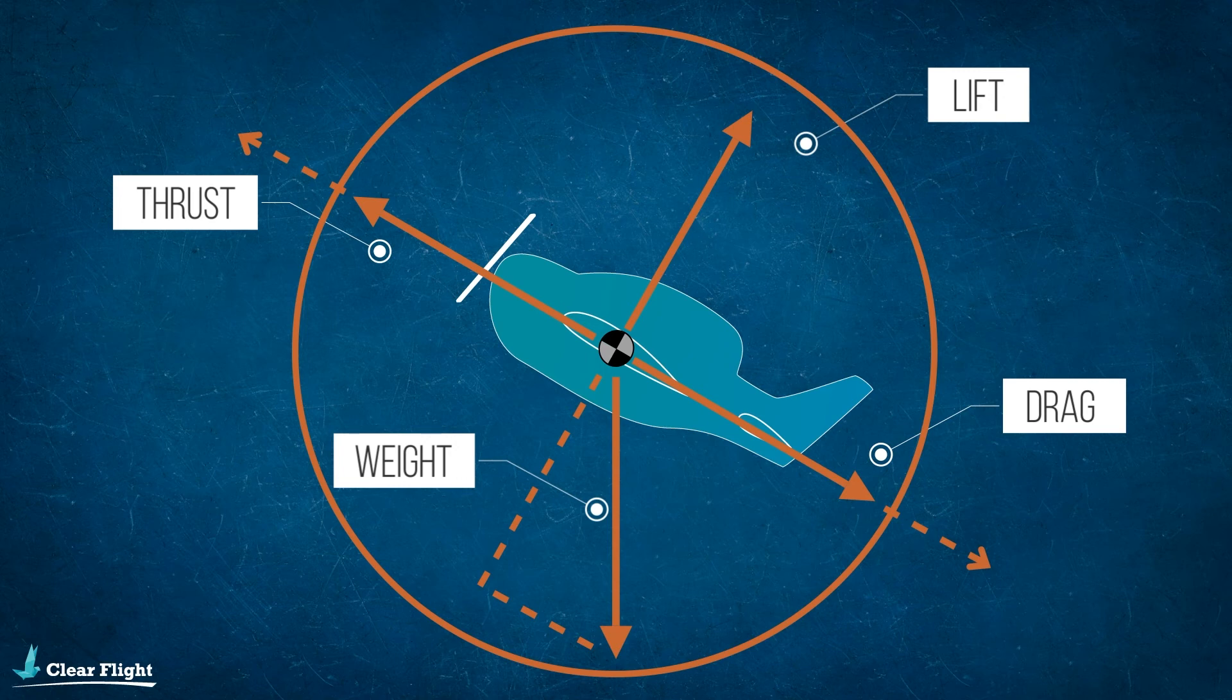A common misunderstanding is that lift is what makes the aircraft climb. From this diagram, we can see that in a climb, lift is always less than weight, and it is the thrust that makes the aircraft climb.